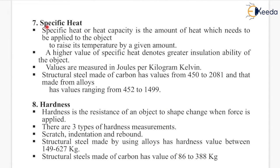Next is specific heat, or heat capacity — the amount of heat which needs to be applied to an object to raise its temperature by a given amount. A higher value of specific heat denotes greater insulation ability. Values are measured in joules per kilogram Kelvin. Carbon structural steel has values from 450 to 2081, and alloy structural steel ranges from 452 to 1499.